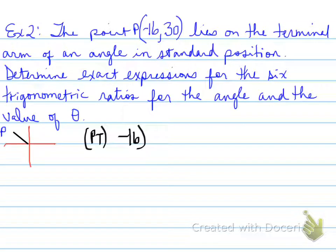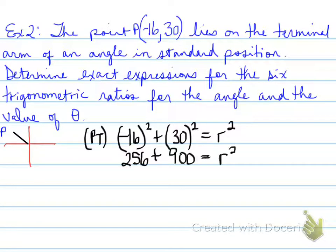Using Pythagorean theorem, we can determine the R value. The R value in here is going to be 34. Remember, it's positive, not negative, so we only have to look at one value.